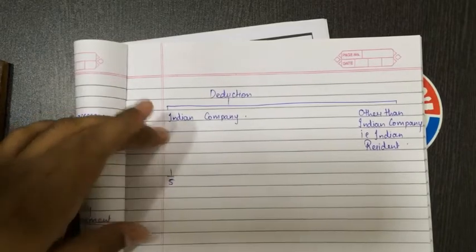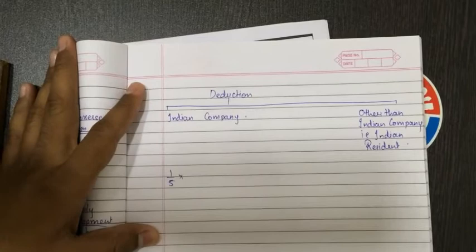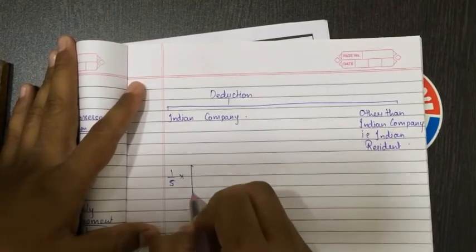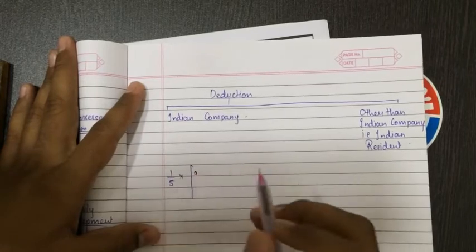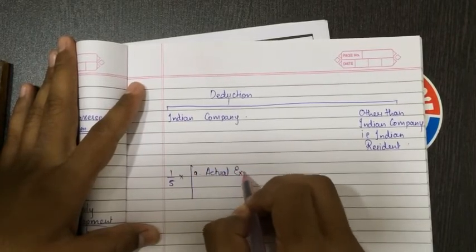Firstly, one-fifth of the entire expenses will be allowed in the previous year. That I'll be writing, the statement will be written down. I'm just telling you in advance how to calculate. First, actual expenses done.